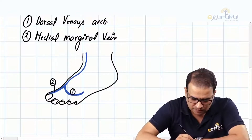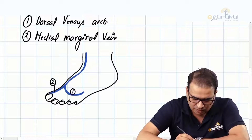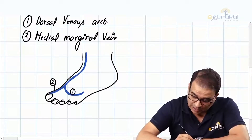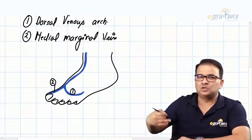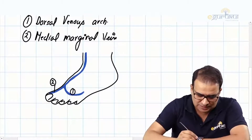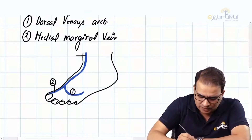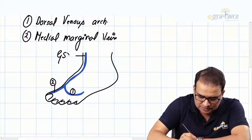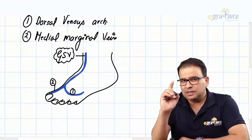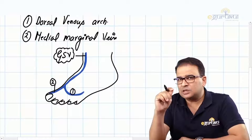The great saphenous vein runs on the medial side of the foot, medial side of the ankle, medial side of the leg, and so on, continuing above. So that is the great saphenous vein - let me write it in short: great saphenous vein formation is this.